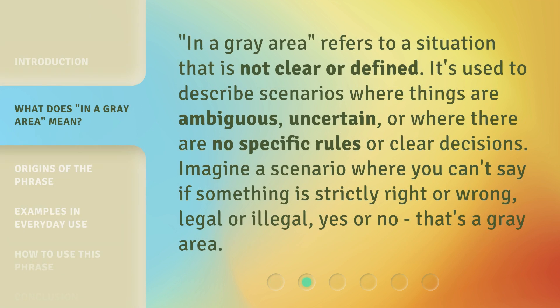In a gray area refers to a situation that is not clear or defined. It's used to describe scenarios where things are ambiguous, uncertain, or where there are no specific rules or clear decisions. Imagine a scenario where you can't say if something is strictly right or wrong, legal or illegal — yes or no. That's a gray area.